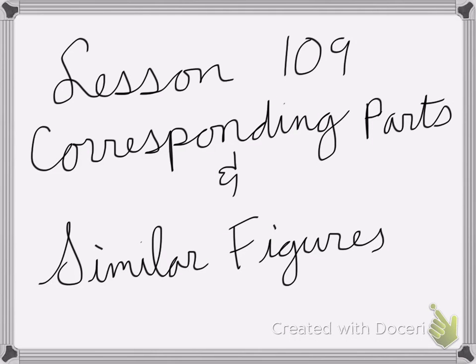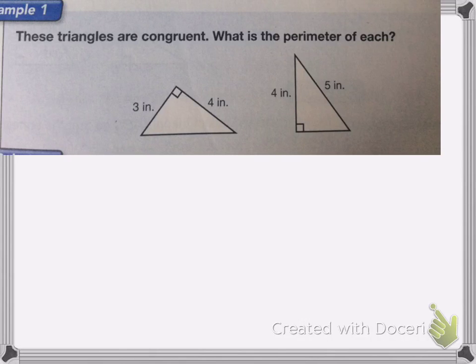Lesson 109 is on corresponding parts and similar figures. Here I have two triangles and they are congruent, which means the same. I want to know what the perimeter of each triangle is.